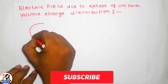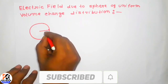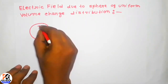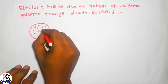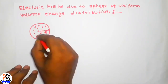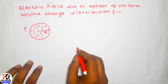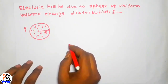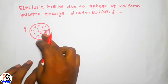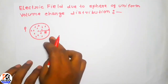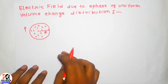Let us take a sphere of radius capital R with uniform volume charge distribution. The charge in the sphere is distributed uniformly and the charge density is rho. We have to calculate the electric field due to this sphere both inside and outside the sphere.